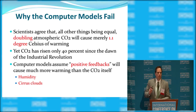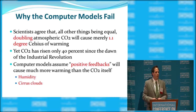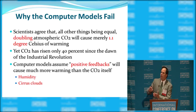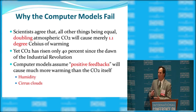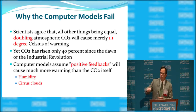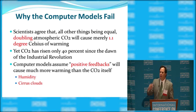How, then, do the computer models predict so much warming? They rely on positive feedbacks. They say the carbon dioxide will cause a little warming, but that warming will cause more atmospheric humidity and a change in cloud cover — specifically more cirrus clouds, which allow sunlight to reach the surface but trap outgoing radiation. Those two factors, they say, are about three times more important than the carbon dioxide itself. So these positive feedbacks are where they get most of their projected warming — it's not the carbon dioxide alone.